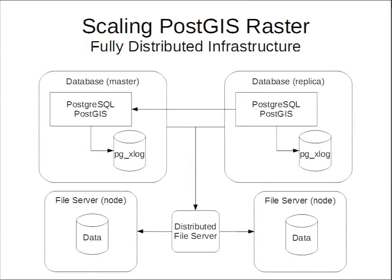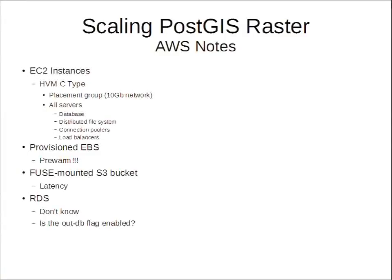One key detail: this is all done on AWS. Go with hardware-virtualized C-type compute nodes because of placement groups — you want that 10-gigabit network as much as you can because you will use it. All servers should be compute type to be on the 10-gigabit network. Make sure to use provisioned IOPS EBS volumes so you can maintain a minimum level of performance. I allocate one-terabyte volumes at a time, and I have to pre-warm them, otherwise you get incremental dips in performance.